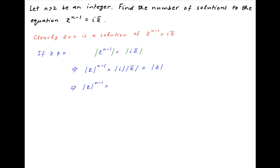We therefore get the absolute value of z raised to the power n minus 1 is equal to the absolute value of z, which implies that the absolute value of z is equal to 1.